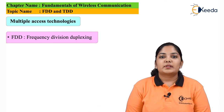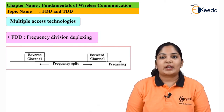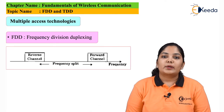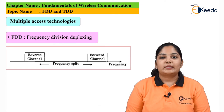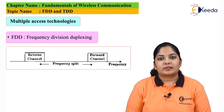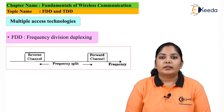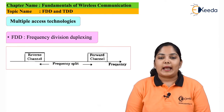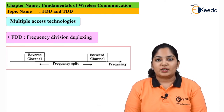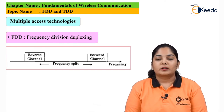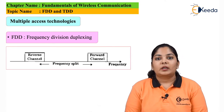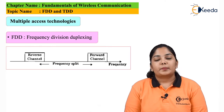Here, every person is allotted a channel and these channels are divided as forward channel and reverse channel. Because the channels are divided as forward and reverse channel, we require a duplexer. Duplexer is a circuit that is provided after the antenna. Every mobile station and base station has antennas, and after the antenna, we require a duplexer because a single antenna is required for both transmission and reception.